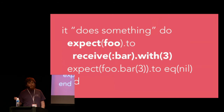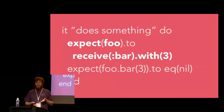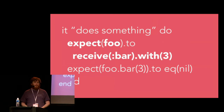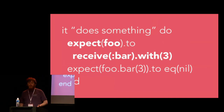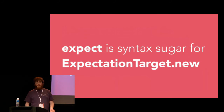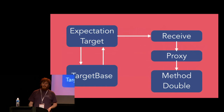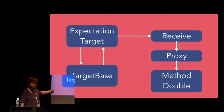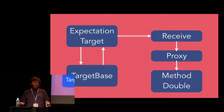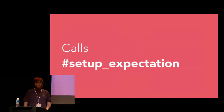Now let's go through this cycle one more time, but with a mock instead of a stub. Let's imagine we have this test: expect foo to receive bar with 3, and then expect foo.bar of 3 to equal nil. As you might expect, given that allow is syntax sugar for AllowanceTarget.new, expect is just syntax sugar for ExpectationTarget.new. The rest of the call graph looks more or less exactly the same — the only thing that's changed is the ExpectationTarget has been dropped in instead of the AllowanceTarget, and it has its to method set up to call SetupExpectation instead of SetupAllowance.